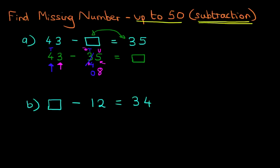So therefore, our answer is eight. We can write this in the original question. 43 minus eight equals 35.